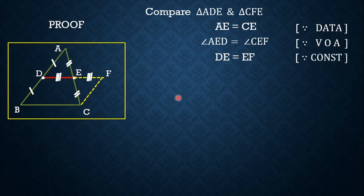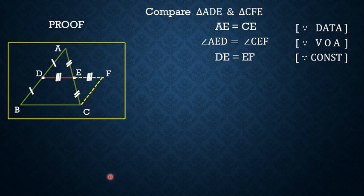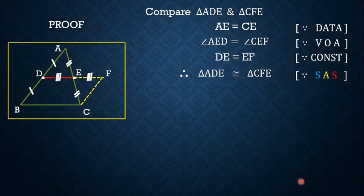The comparison shows that two sides and an included angle of triangle ADE are respectively equal to two sides and an included angle of triangle CEF. Therefore these two triangles are congruent by the SAS (Side-Angle-Side) criterion.